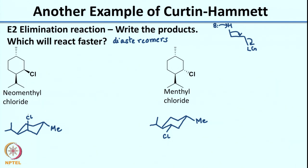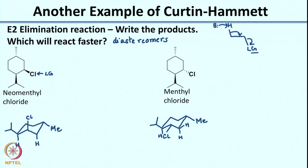Now we know what the leaving group is. Which are the hydrogens that will get eliminated? It is the hydrogen which is alpha to the leaving group. Now let us identify the hydrogens alpha in each case. Based on the criteria that you need an anti-periplanar orientation, what you see is that in the first case, you very nicely have an anti-periplanar orientation of two hydrogens. So any of these can undergo elimination.